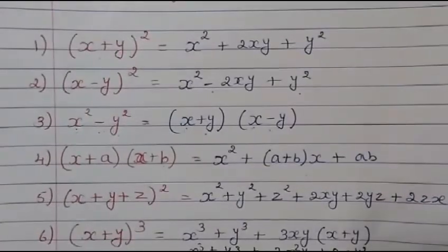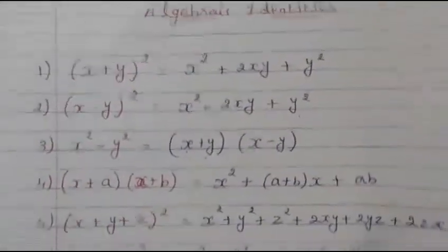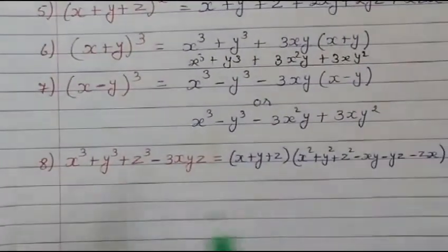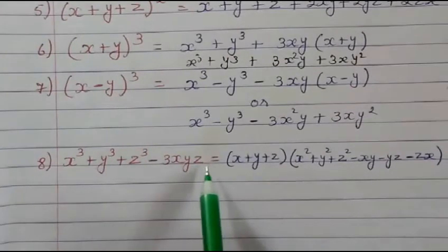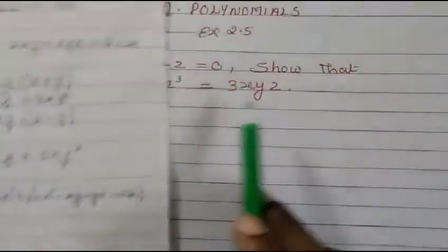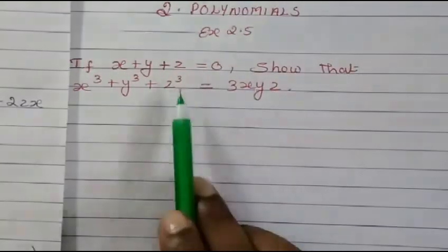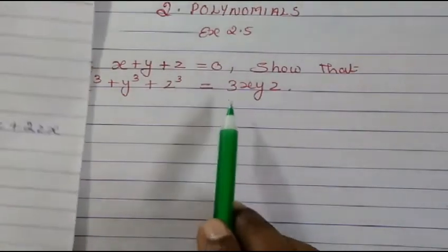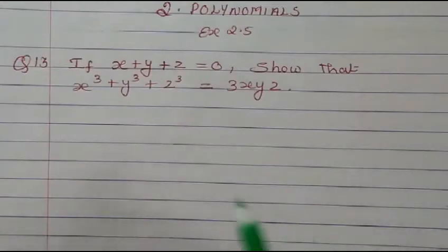In your textbook you are given 8 algebraic identities, so you have to learn this identity. Here you see: x cube plus y cube plus z cube minus 3xyz is equal to a certain expansion. If you bring the 3xyz to the inside it will become minus 3xyz, equal to the expansion form. Let's write it down.